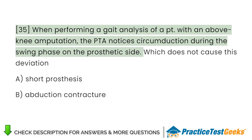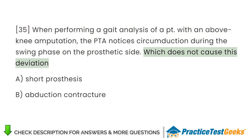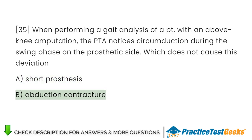When performing a gait analysis of a patient with an above-knee amputation, the PTA notices circumduction during the swing phase on the prosthetic side. Which does not cause this deviation? A. Short prosthesis. B. Abduction contracture.